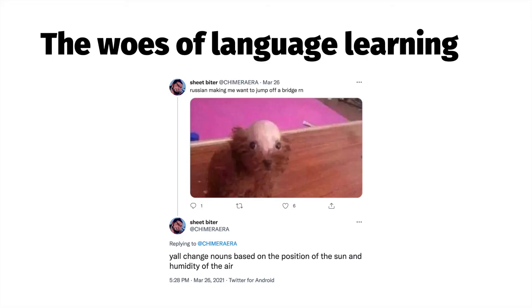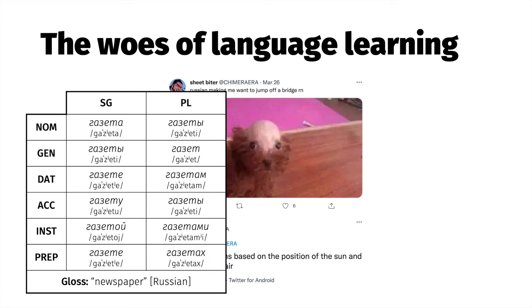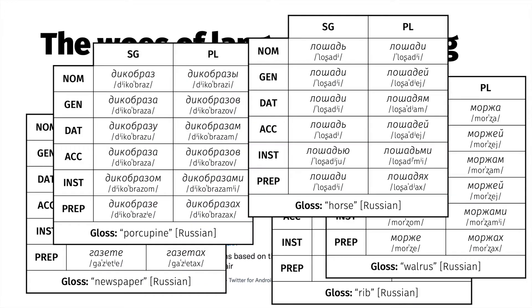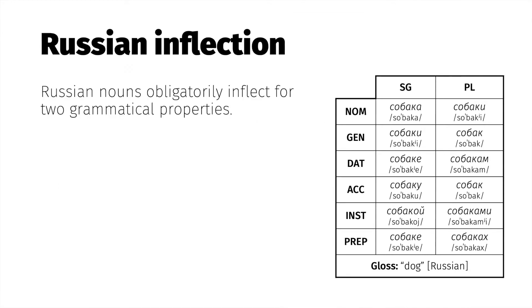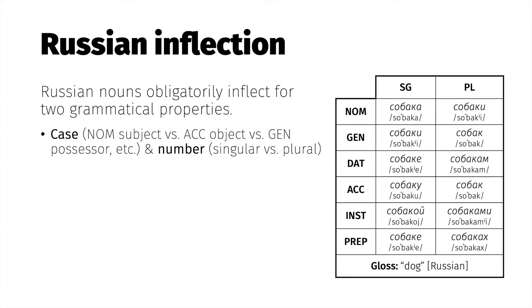If you've ever studied a foreign language, learning any language requires you to memorize thousands of new words, but some languages make the task even harder, additionally requiring you to learn how to inflect each word depending on its context and meaning. For example, every noun in Russian obligatorily bears an inflectional suffix that includes two grammatical properties: case, that conveys the noun's syntactical function, and number — singular versus plural.